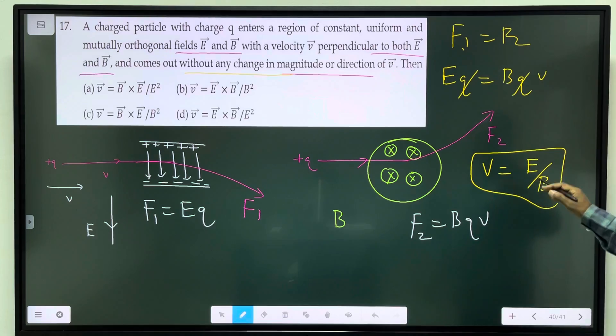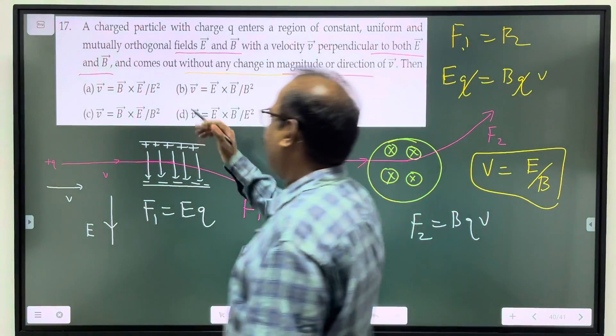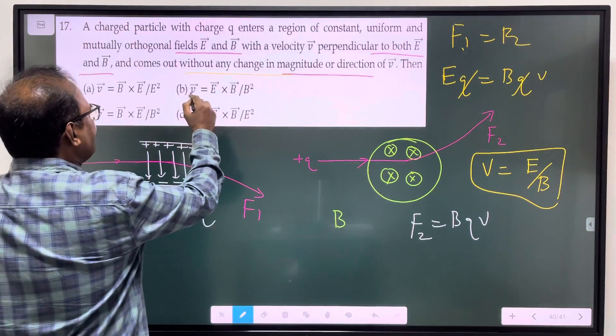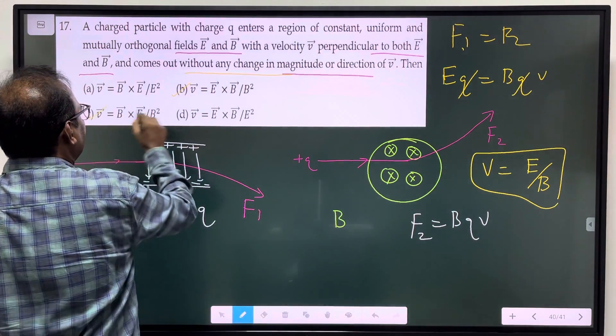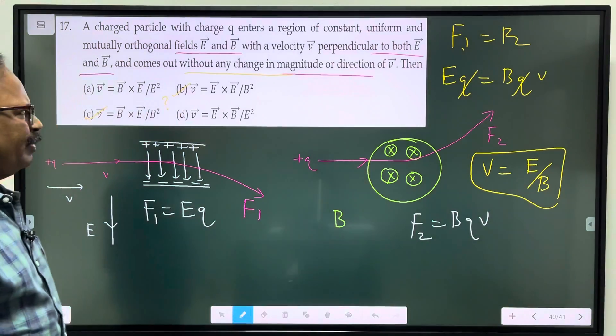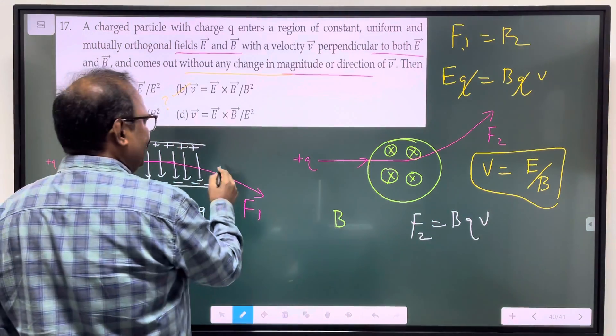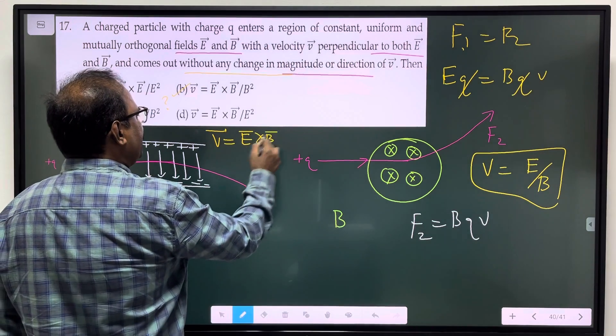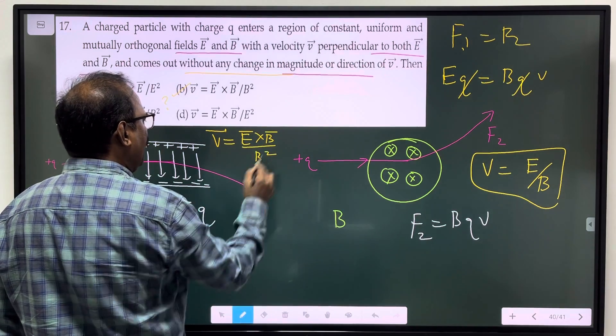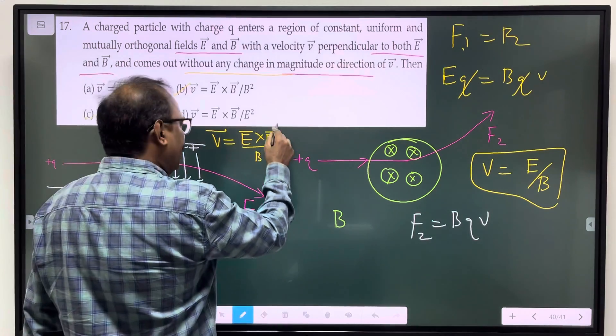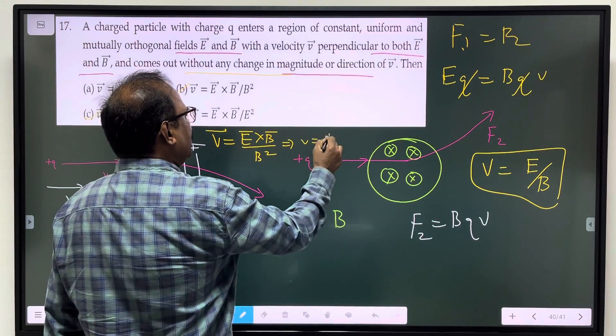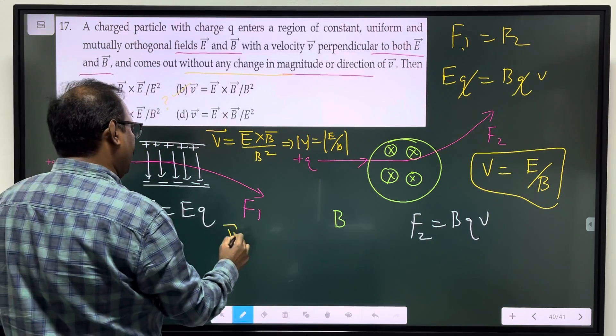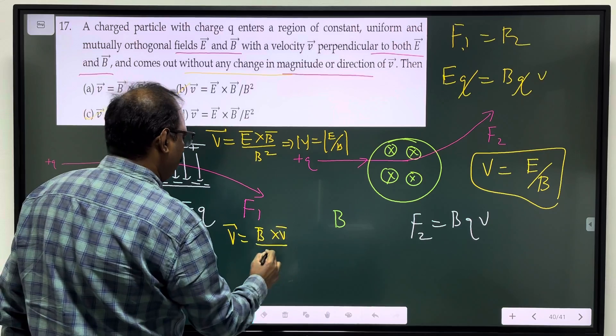E by B, E is the answer. The answer for the question is actually the velocity vector formula E cross B by B square.